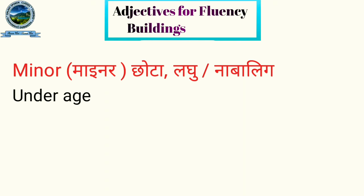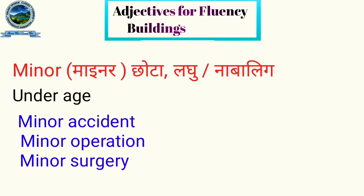Next word is 'minor,' spelled M-I-N-O-R. Minor means small or underage. For example: minor accident, minor operation, minor surgery — meaning a small operation or small surgery.